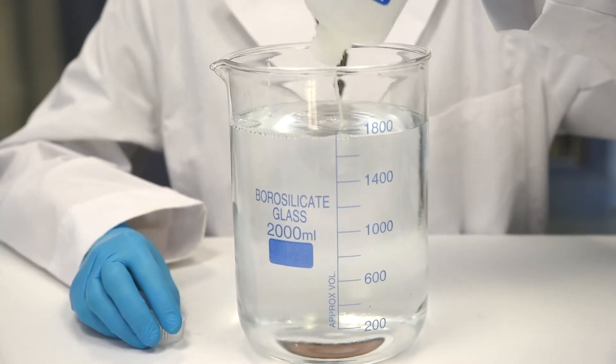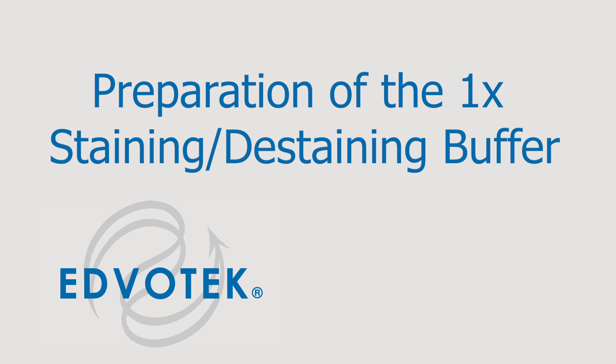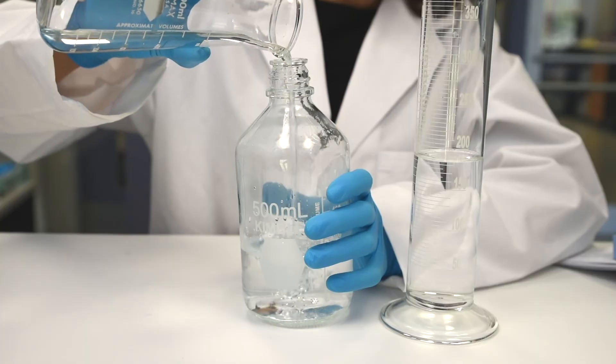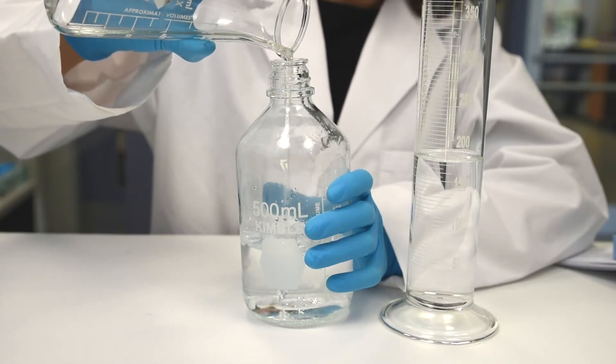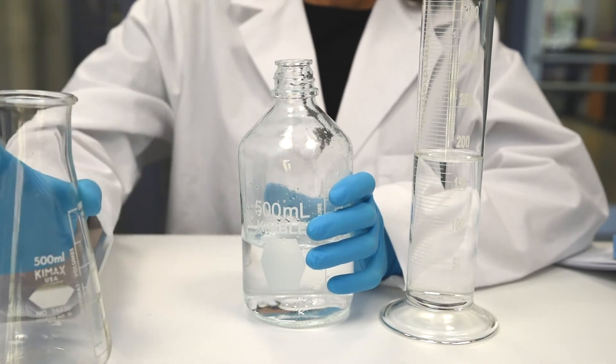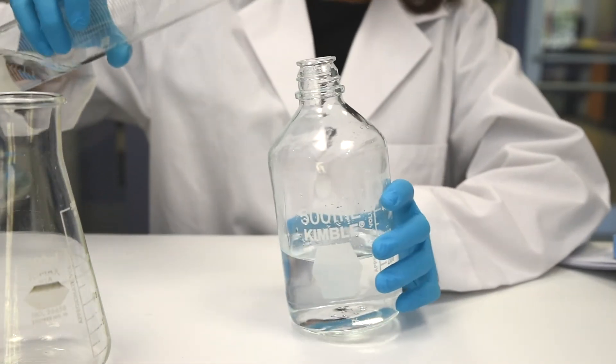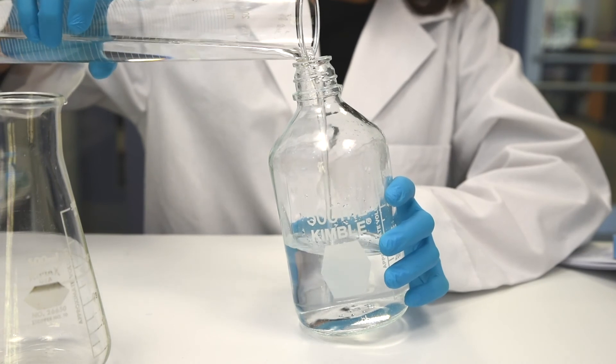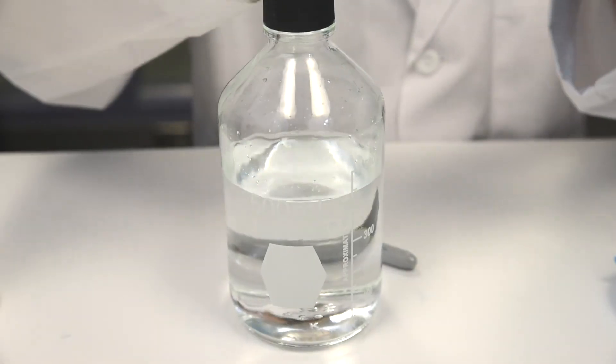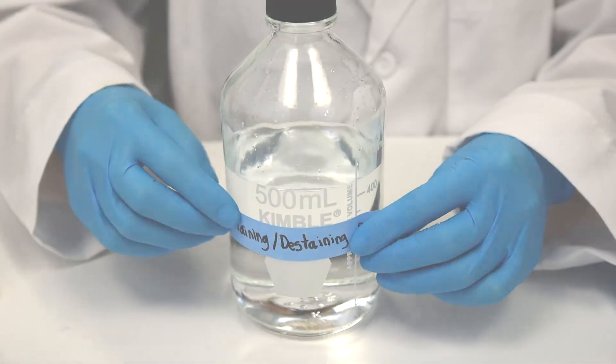Preparation of the staining de-staining buffer: Step one, prepare a stock solution of ethanol and glacial acetic acid by combining 180 ml of ethanol, 140 ml of distilled water, and 40 ml of glacial acetic acid. Label the solution as staining de-staining buffer.